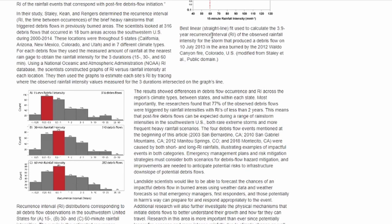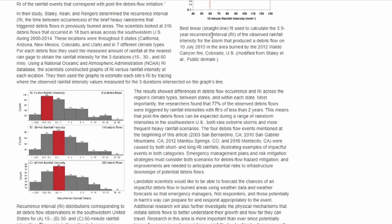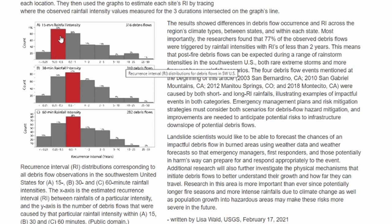For the 15-minute rainfall intensity, obviously the rainfall intensity was much worse here. They counted 316 debris flows in the 15-minute intervals, and it was when you had a quarter of an inch to a half an inch — that was the most abundant. That's the way I'm reading this.